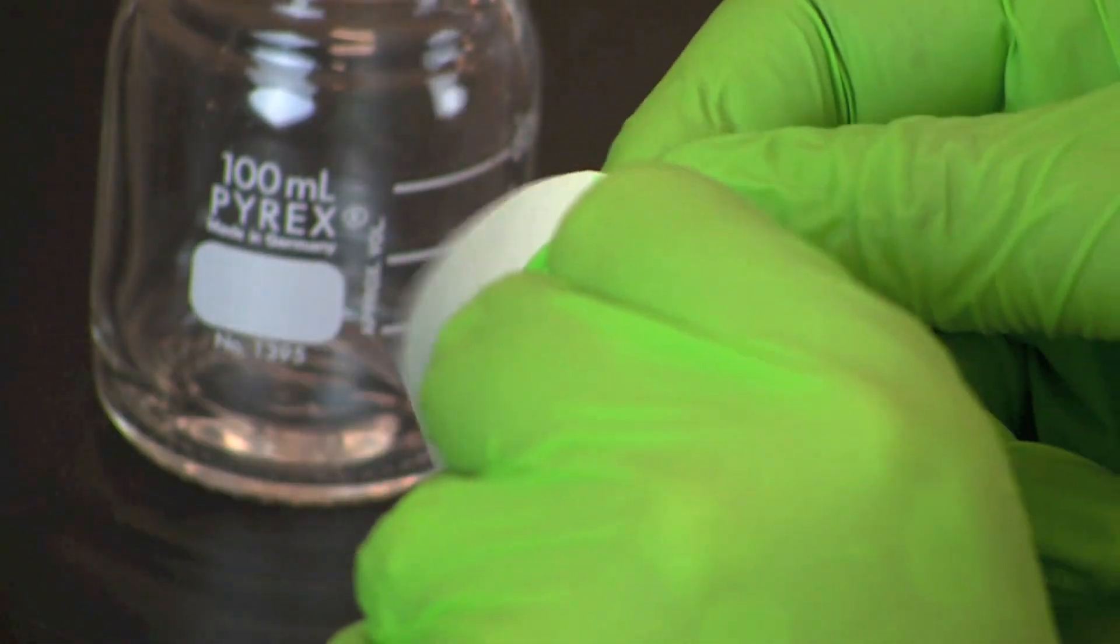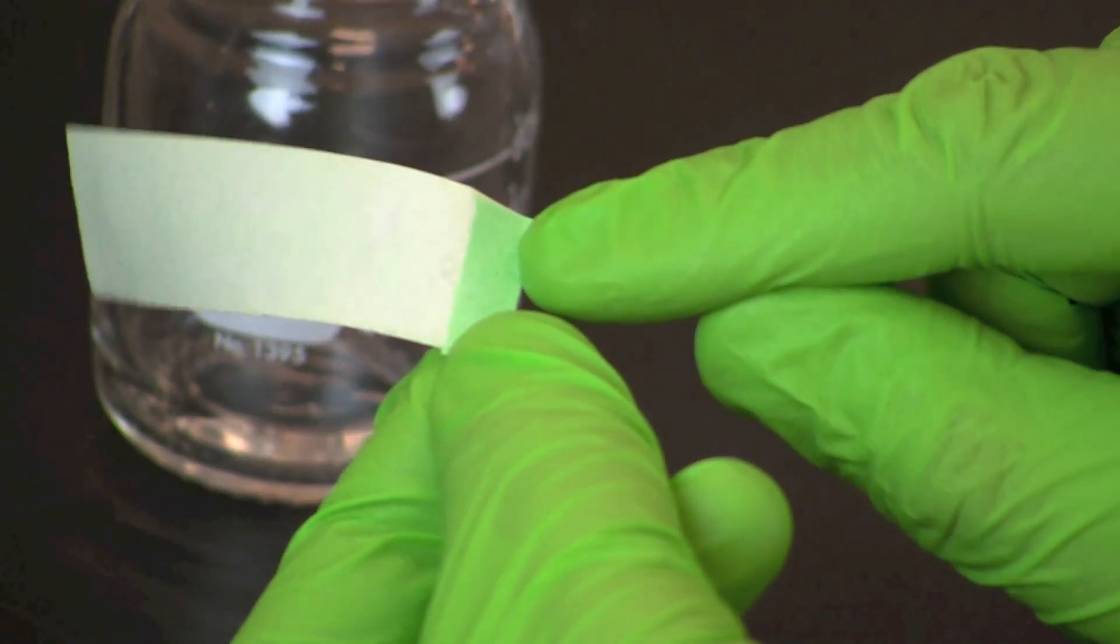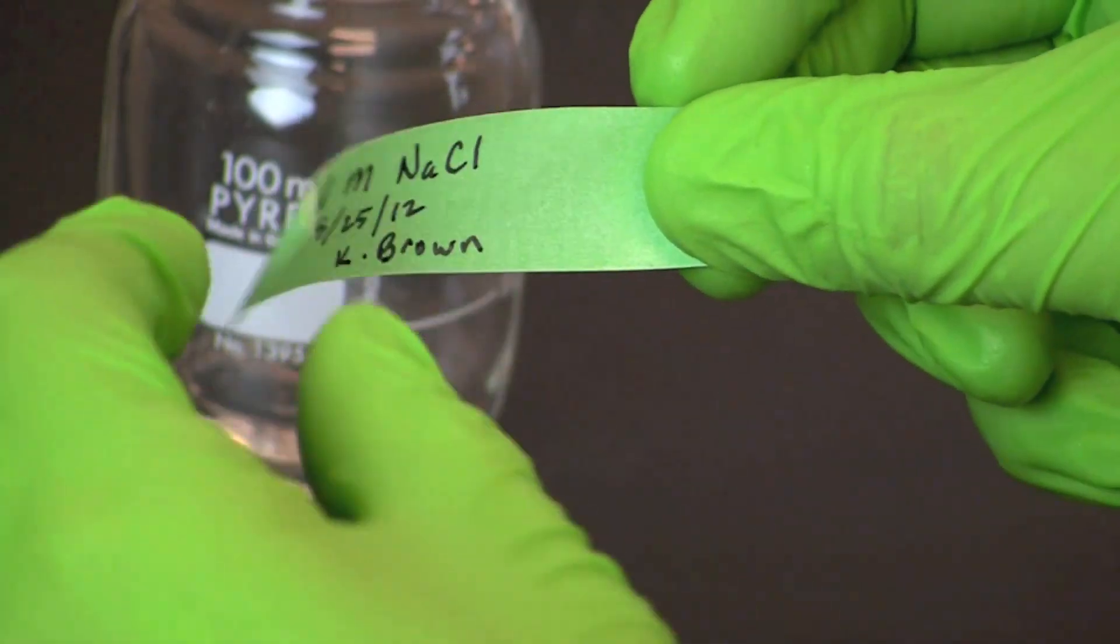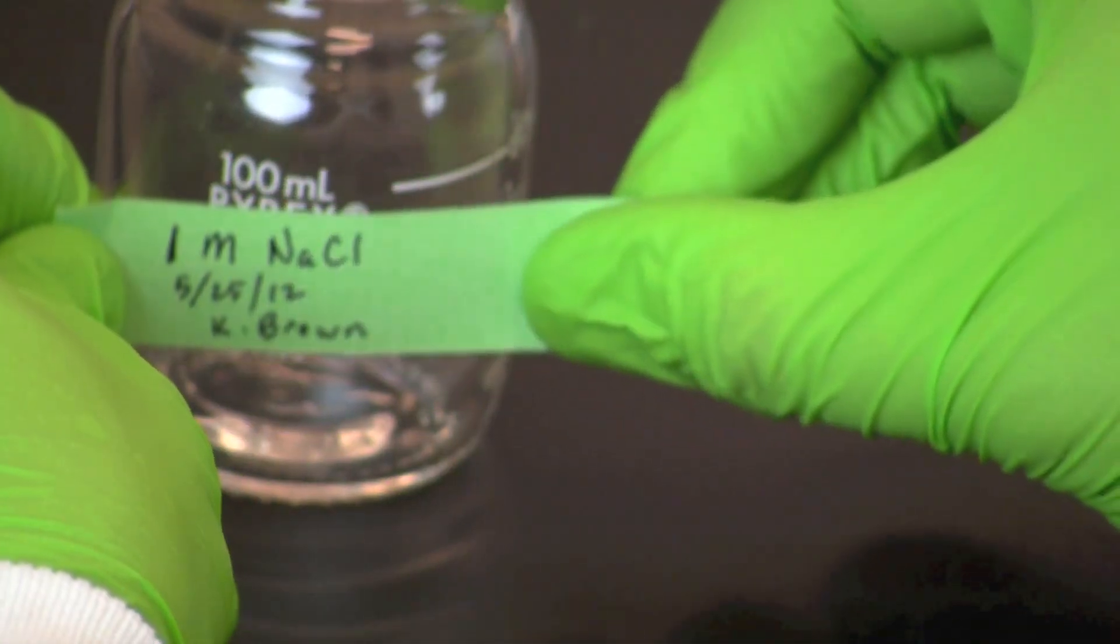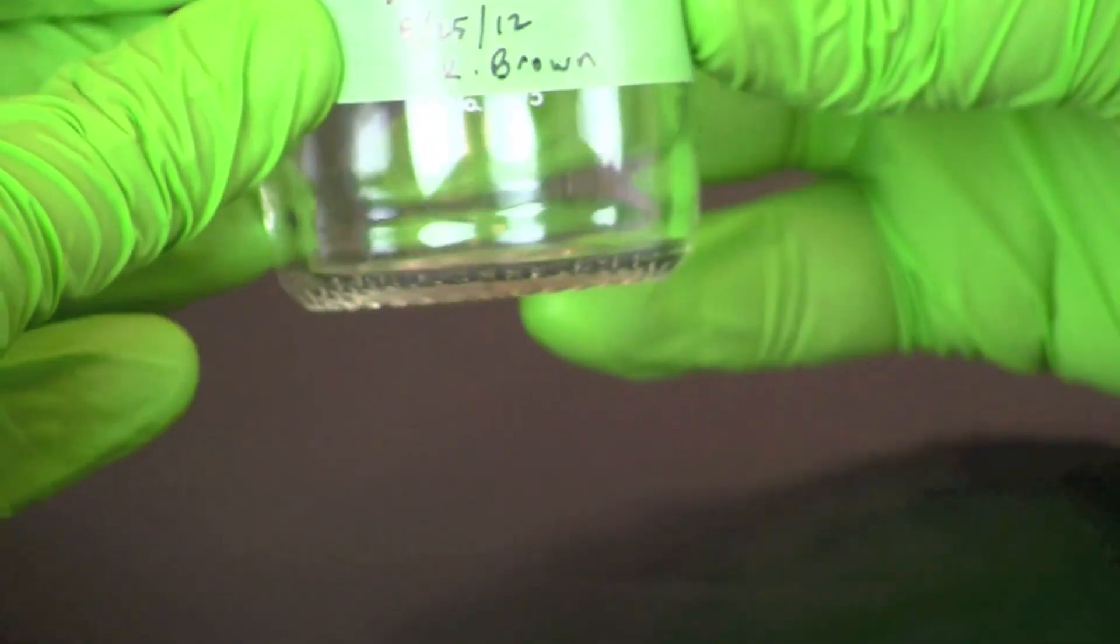Folding the side of the label will make it easier to remove the label at a later date. Place the label firmly onto the reagent bottle.